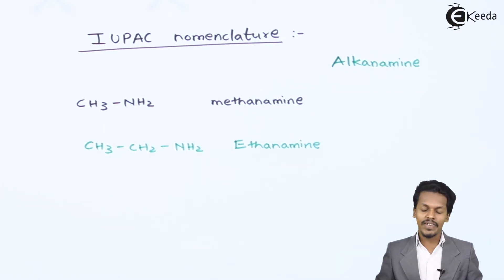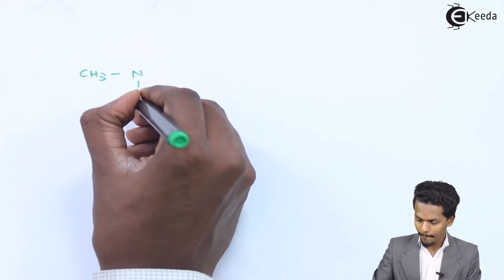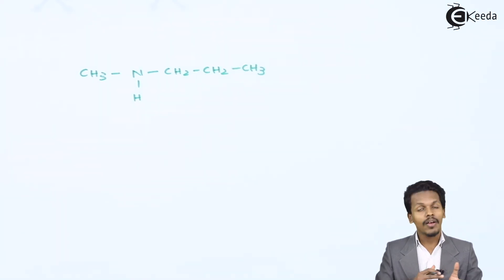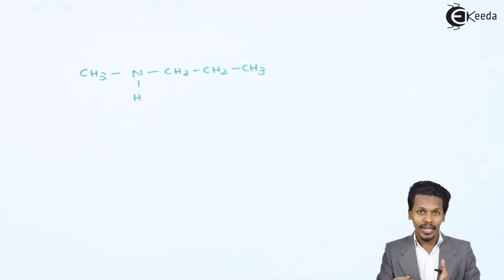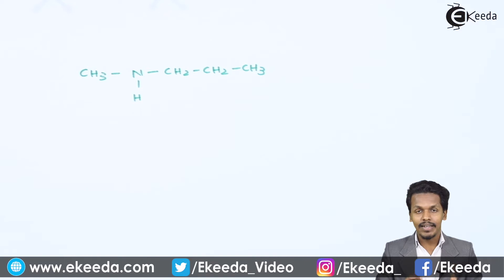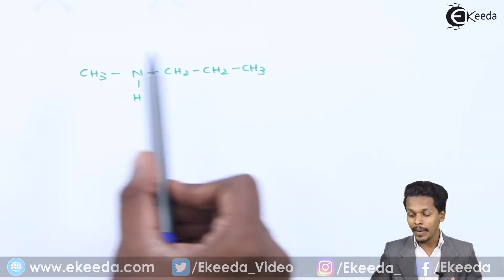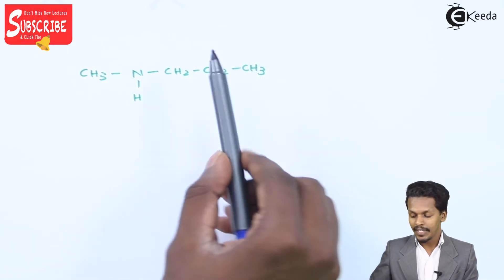Those were two examples of primary amines. But what happens if we have to give the nomenclature to a secondary amine? Giving the common name is easy — it could be named methylpropylamine. But according to IUPAC, we have to consider the longest chain that consists of carbon atoms — the alkyl group with the larger number of carbon atoms — and that becomes the parent chain.